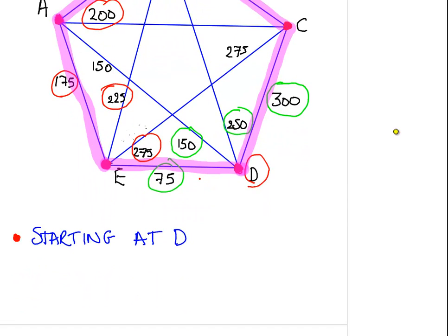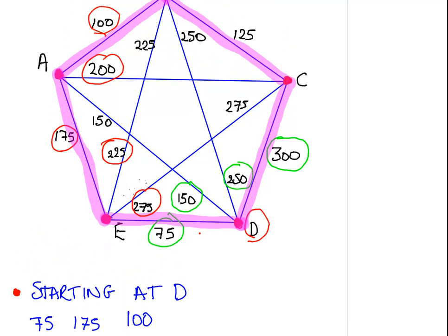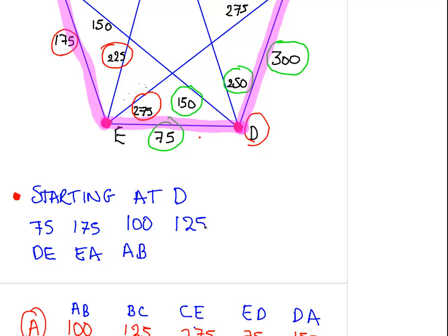I am just going to write it down here. It was D to E, was 75. Then we went from E to A and that was 175. A to B was 100. Let's go back, B to C was 125, and then finally C to D was 300. Now if you top that up in your calculator, you'd find that the grand total there is 775.